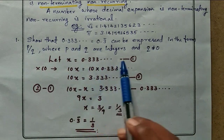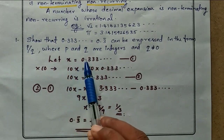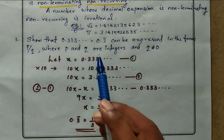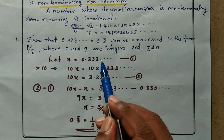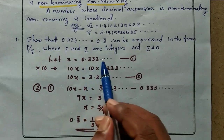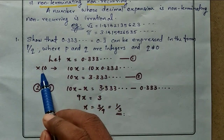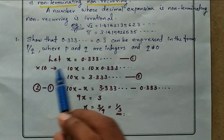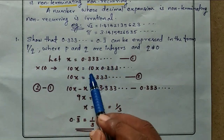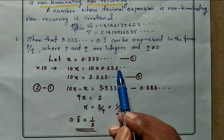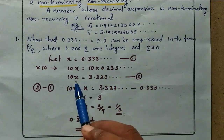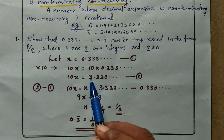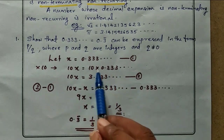Let x = 0.333..., which is equation number one. Since one number is repeating, we multiply by 10. So 10x equals 10 into 0.333..., which equals 3.333...